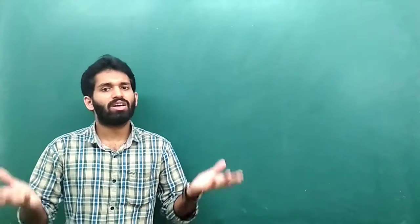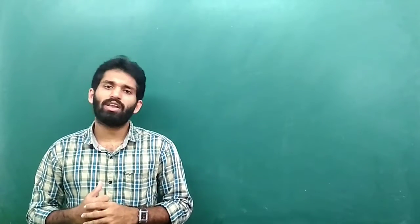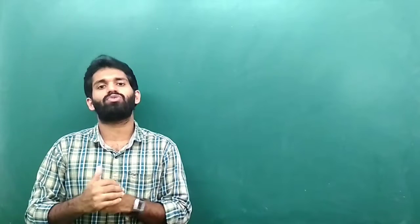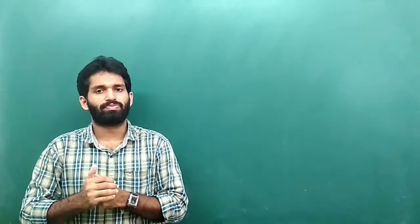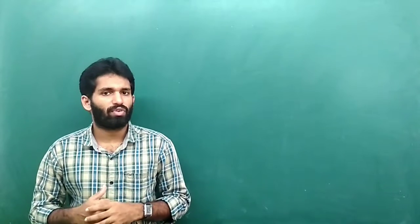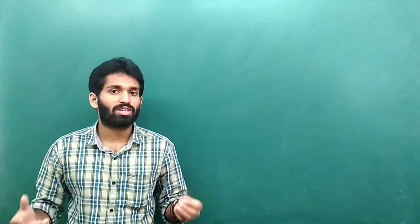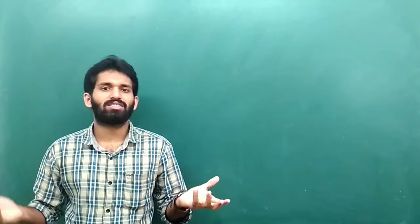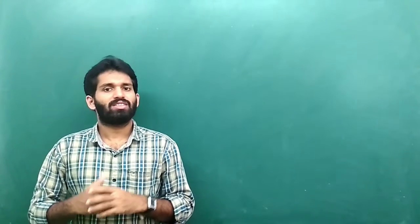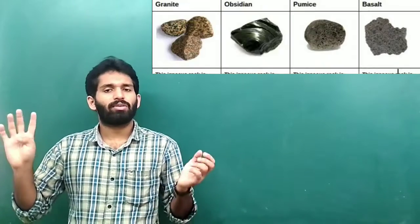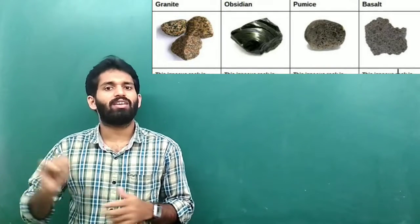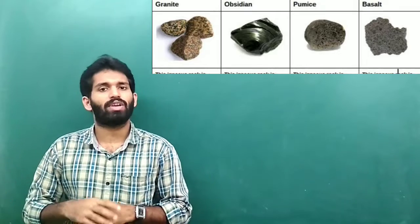This lava cools down and hardens and solidifies to form an igneous rock. The igneous rock is again classified into four types, depending on their shape, size, color, and type of mineral present in them: granite, pumice, basalt, and obsidian.